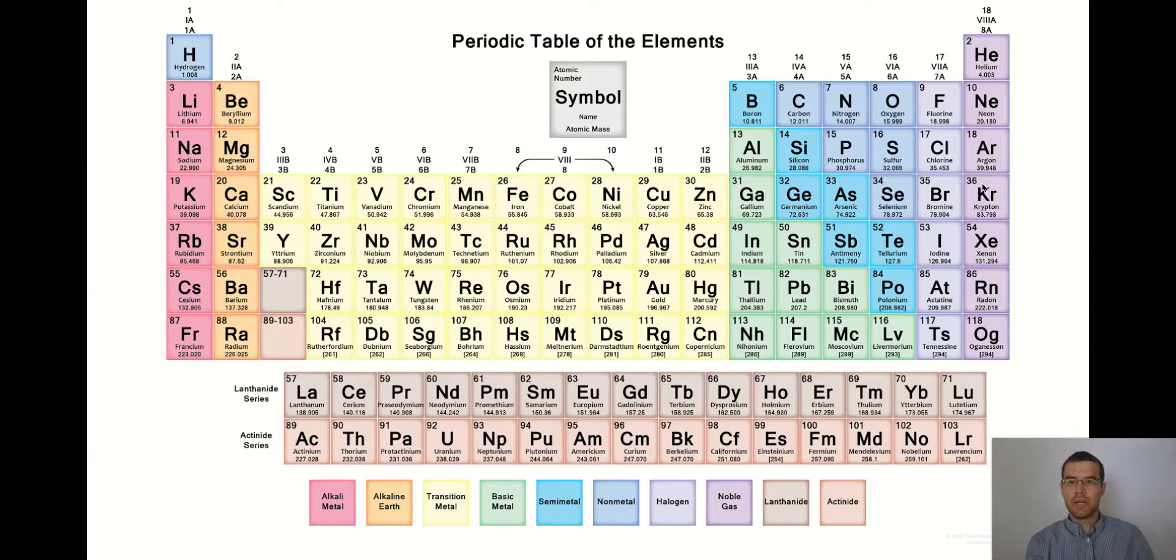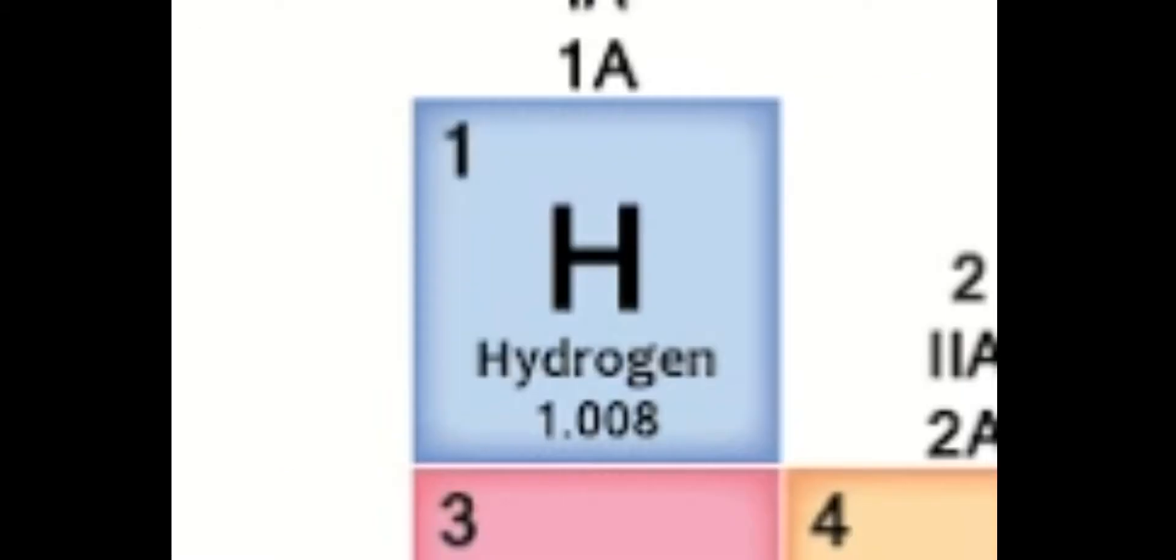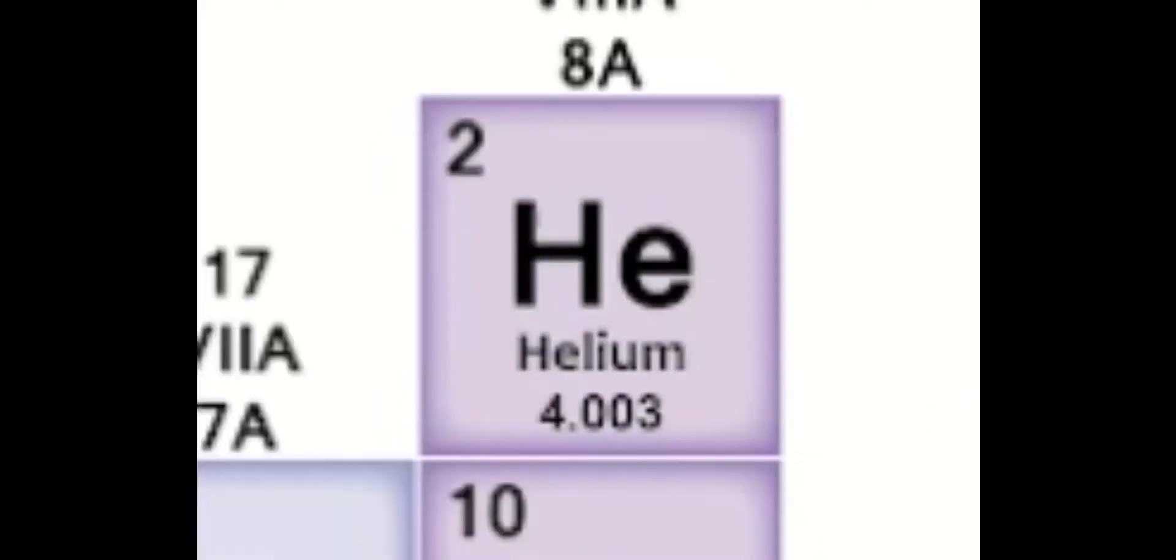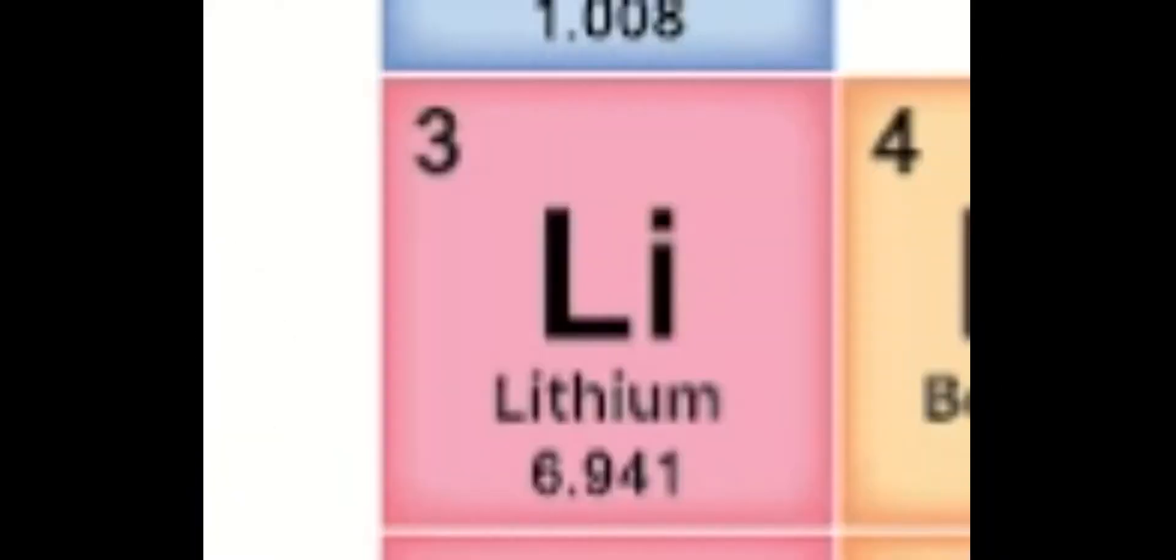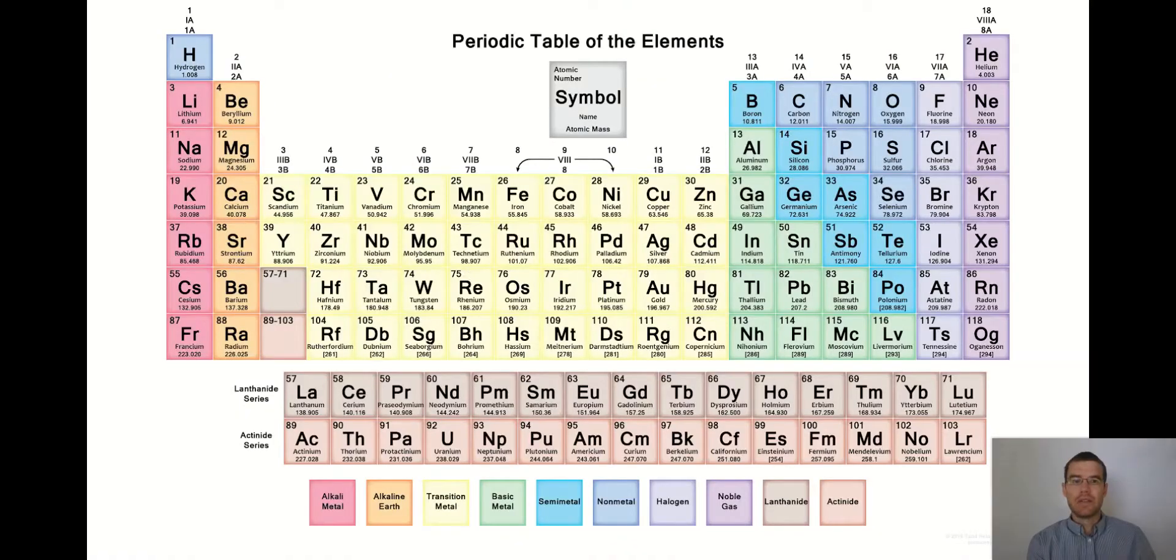We can look at the periodic table. You can see hydrogen has a mass of 1.008, helium 4.003, lithium is 6.941, and so on.